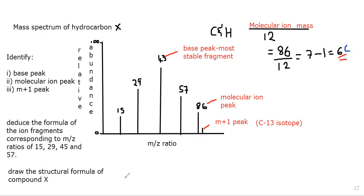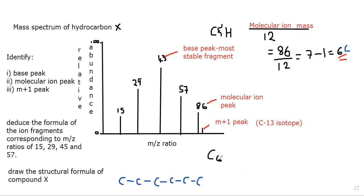Since it has 6 carbons, it is hexane. Where it says draw the structural formula of compound X, we can go ahead and do that. The molecular formula would be C6H14 for our alkane — hexane. So 12 sixes is 72, and 72 plus 14 gives 86, confirming our molecular ion.